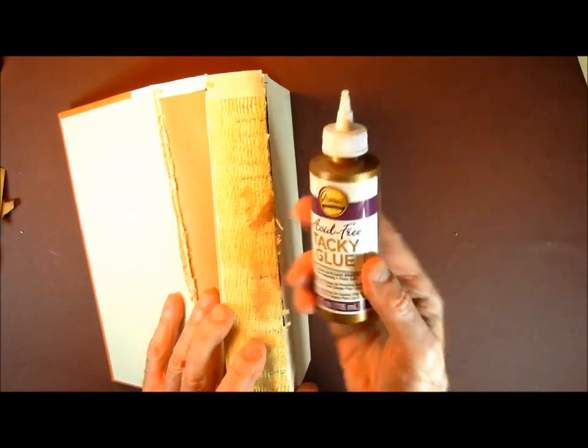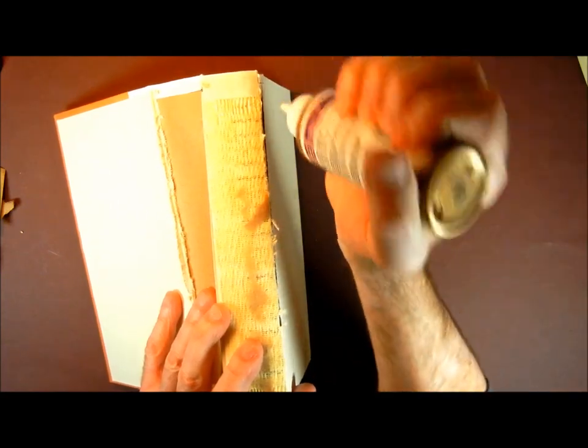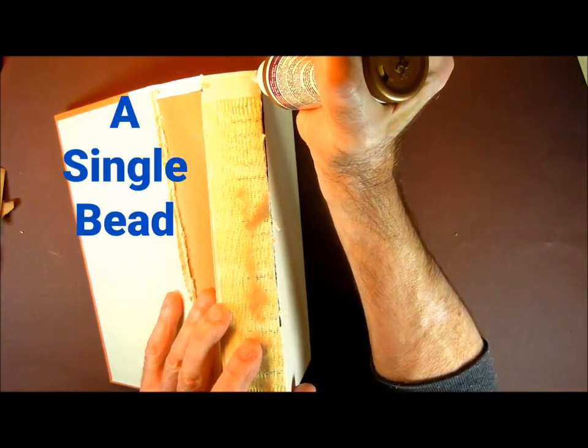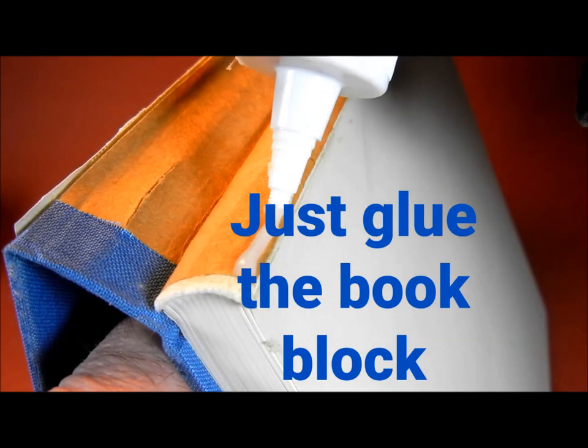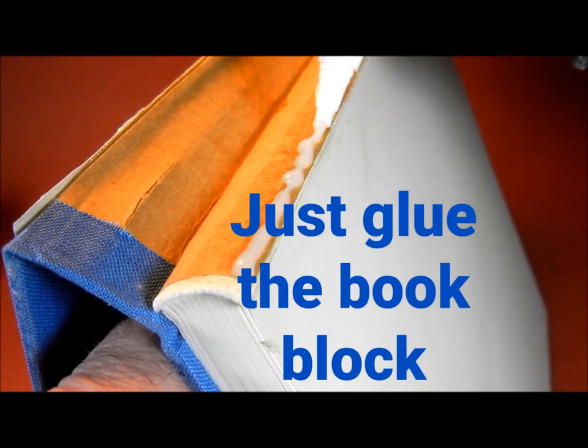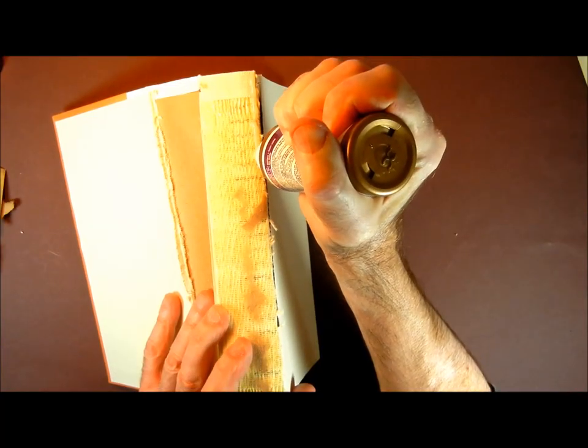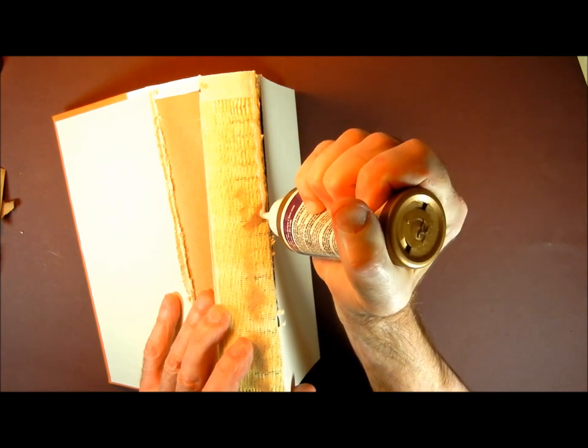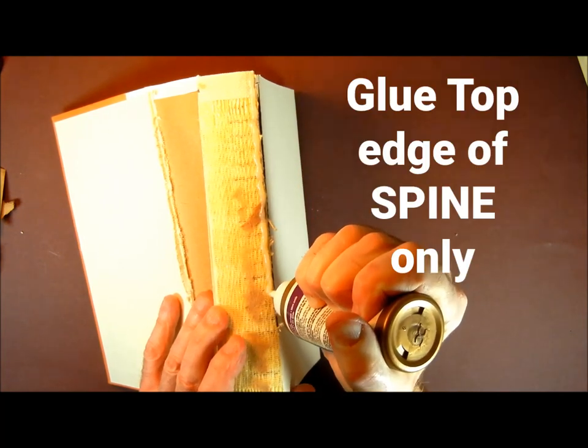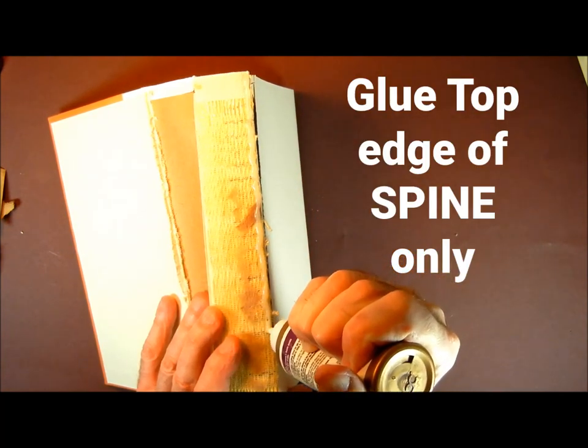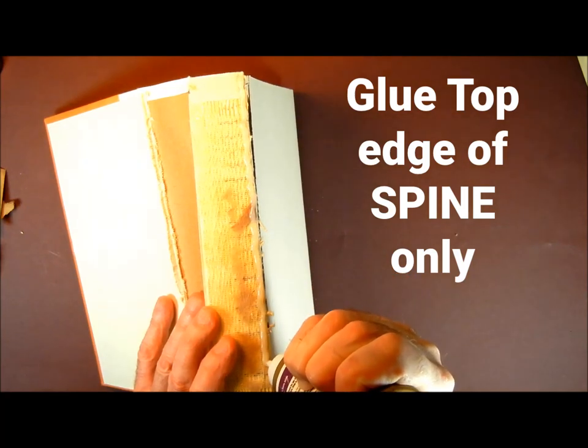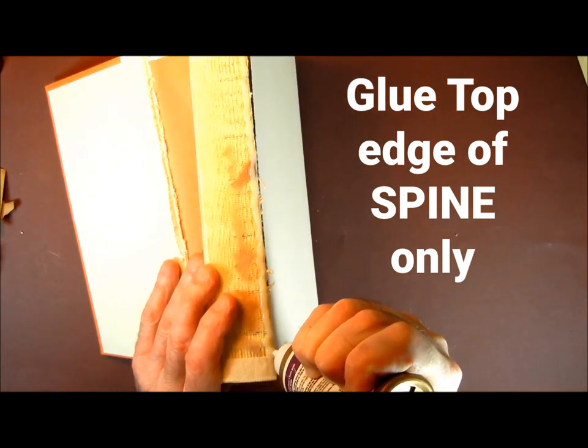Now I take the Aileen's Acid Free Tacky Glue and run a single bead of it along the inside top edge. I'm being a little bit generous with the amount I'm putting on here. I'm only doing the top edge because I want the spine to remain flexible, and it does remain flexible in the other books that I've done.